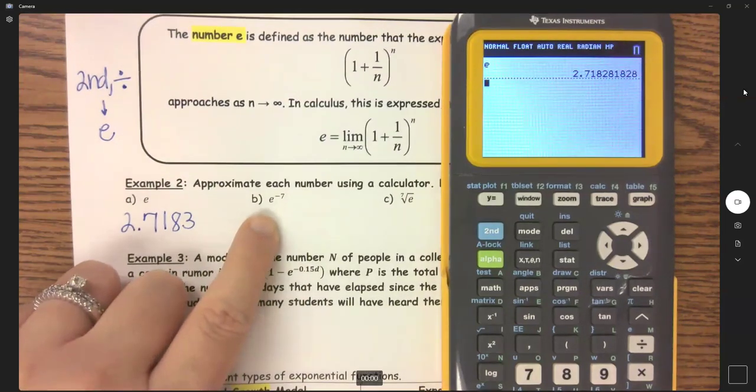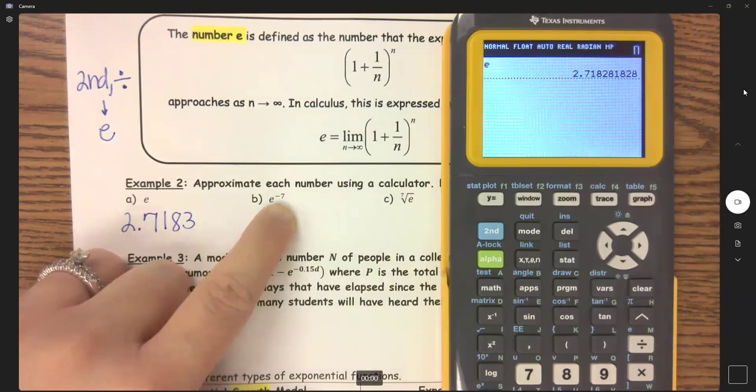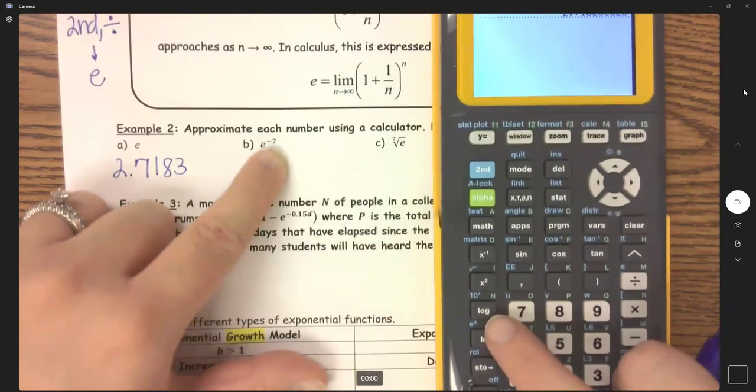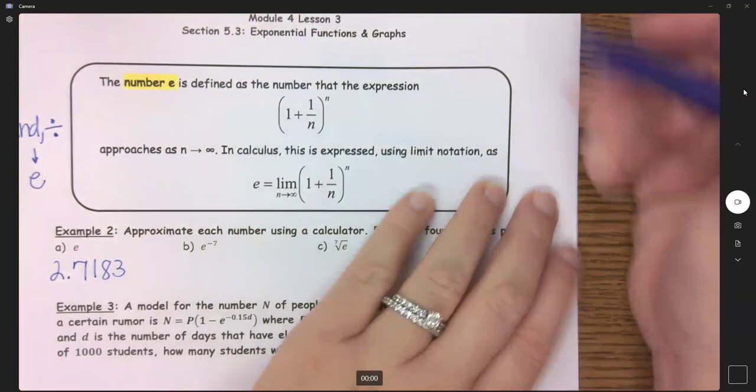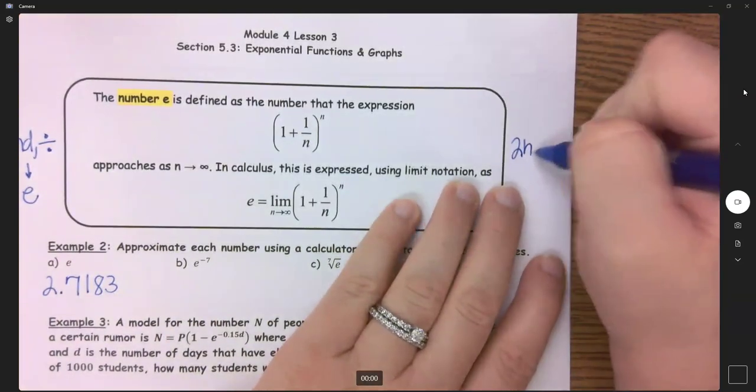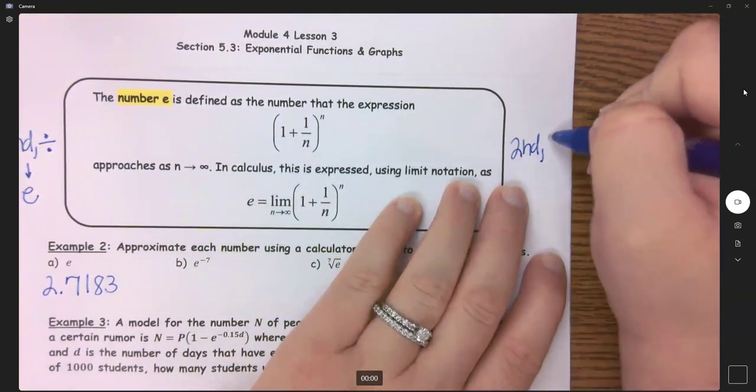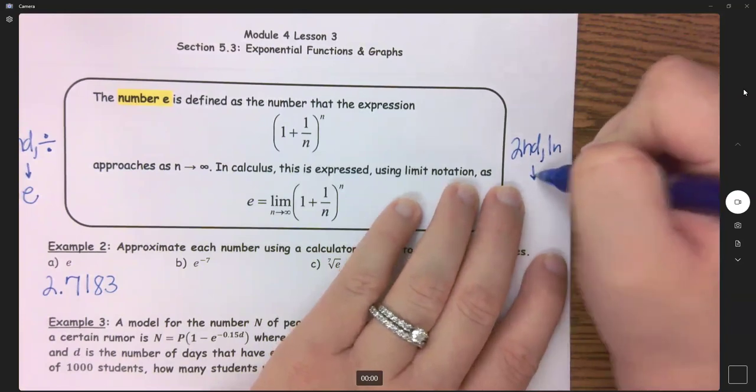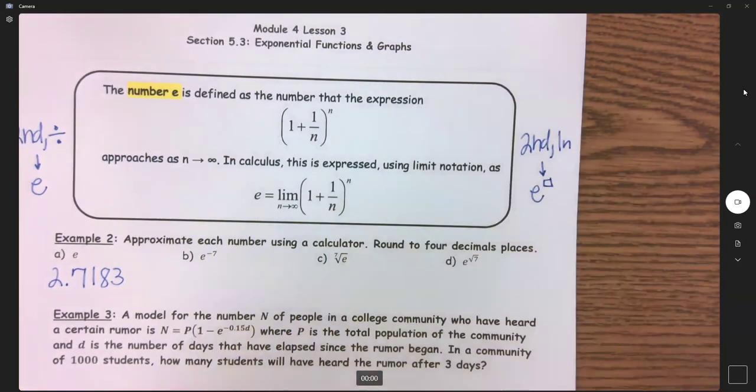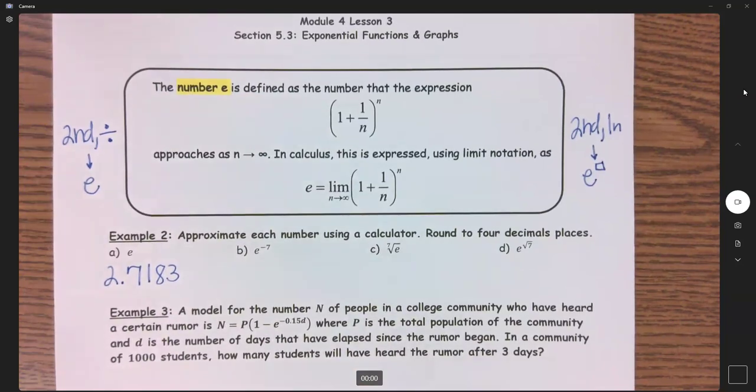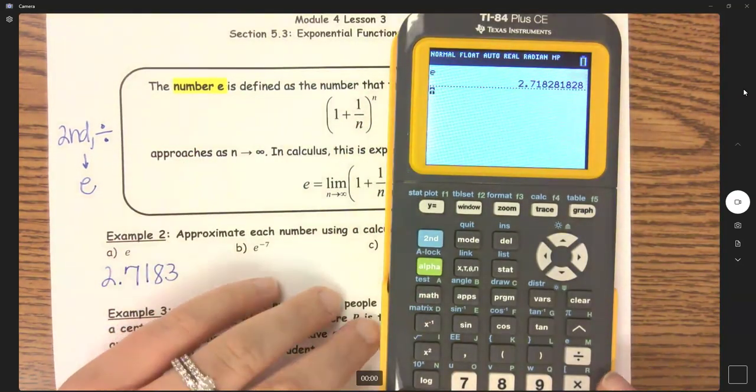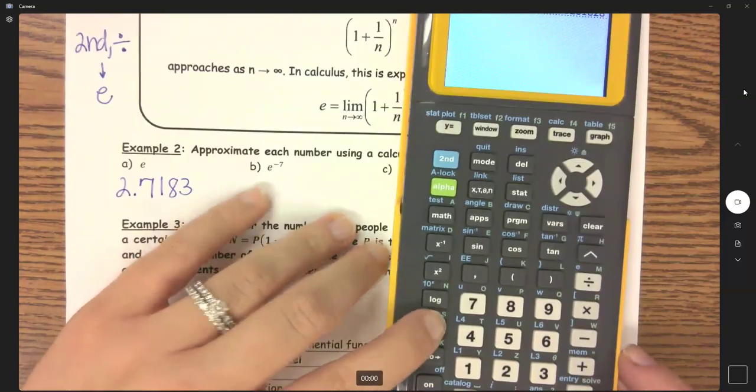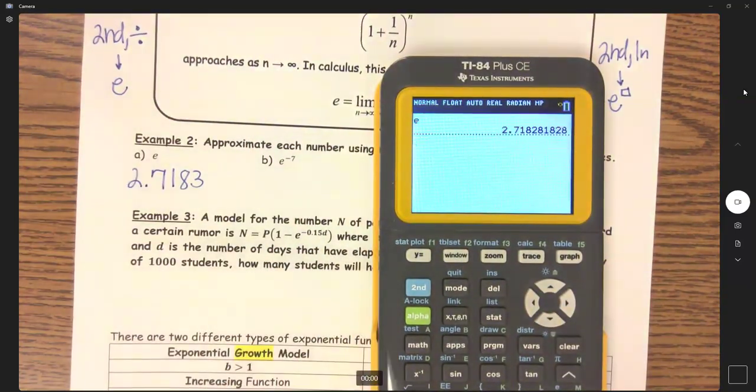Now, when I want to put in e with an exponent, which is a lot of times how we deal with e, then I want to use this button here. So I'm going to hit second ln. And that will give me e to some power. So I'm going to go second ln down here. And we have e to the negative 7.